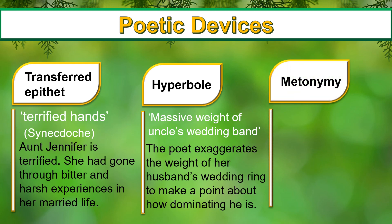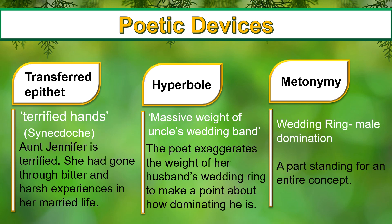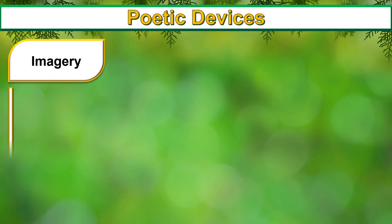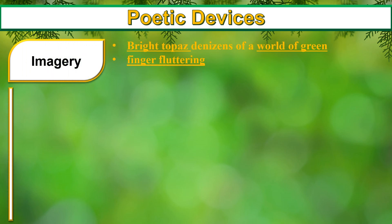Next we have metonymy — a figure of speech which refers to something by using an object closely associated with it. The poet has used metonymy to describe the matrimonial hardships Aunt Jennifer is facing. The wedding ring or wedding band represents the sad, unfortunate married life Aunt Jennifer has been through. The poet Adrian Rich has used various images and symbols to stress upon the chauvinism of man and the oppression of women at his hands.